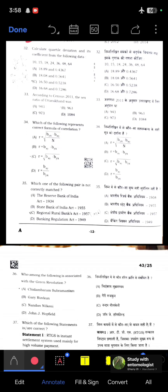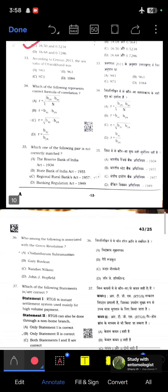Calculate quartile deviation and its coefficient from the following data: 10, 15, 18, 24, 36, 48, 64. If you calculate using the formula, quartile deviation will come to 16.50 and its coefficient will come to 0.5238. Option C is correct.